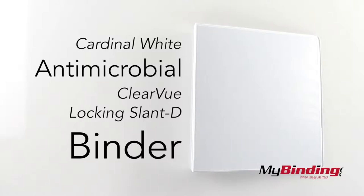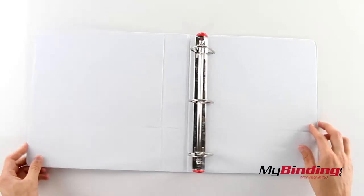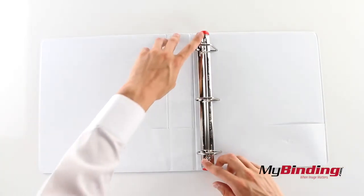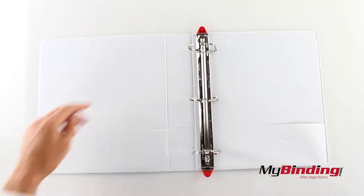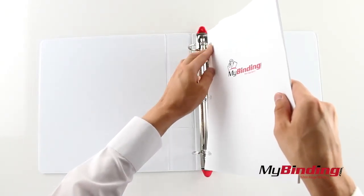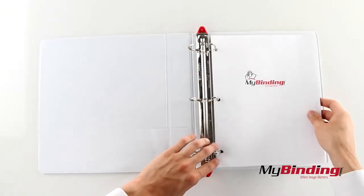Welcome to MyBinding.com. This is the Cardinal White Anti-Microbial Clearview Locking Slant D Binder. Opening it up we see the gel padded side tabs for extra comfort. Press them out to open the rings.